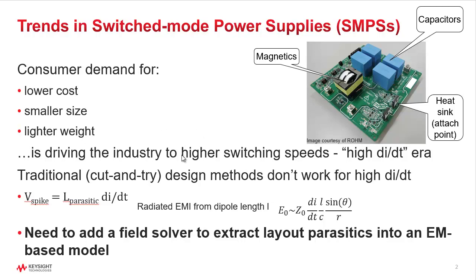It's well known that if you go to high DI/DT — the current slew rate in the switch loop — you can get better performing switch mode power supplies. But there's a downside. The traditional cut-and-try design methodology, where you do a bit of pre-layout SPICE and then build a prototype and try it out, doesn't work very well with high DI/DT.